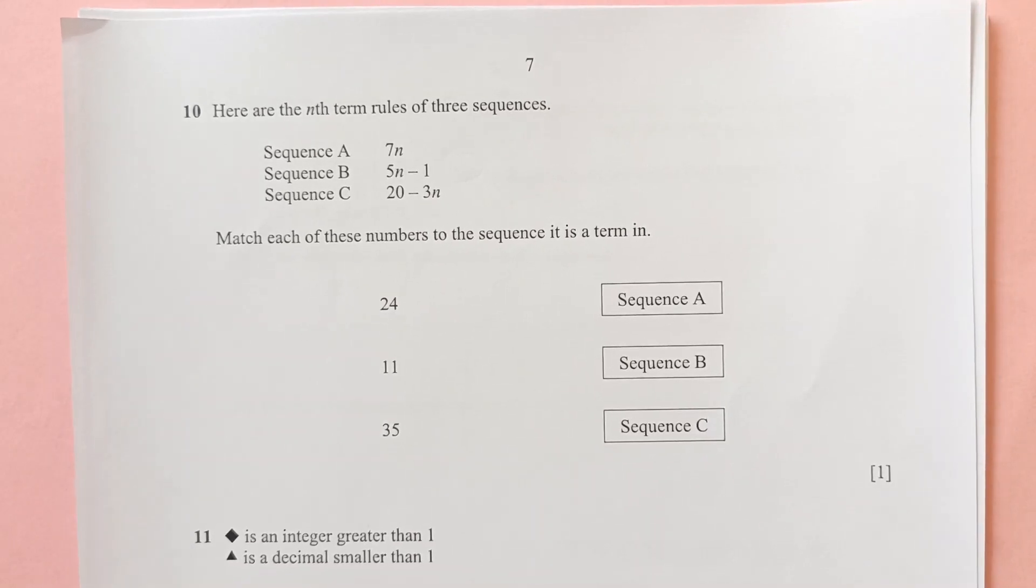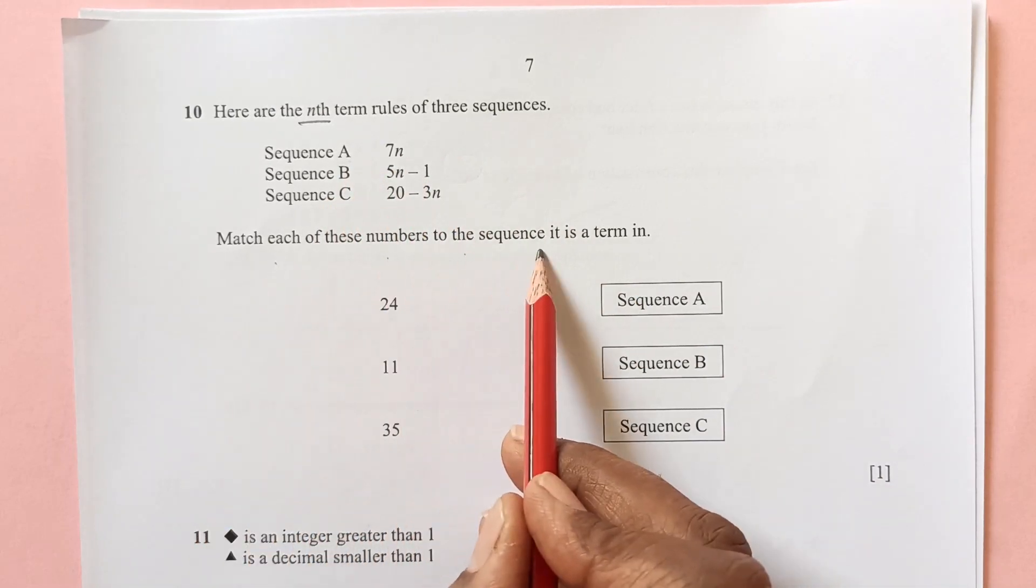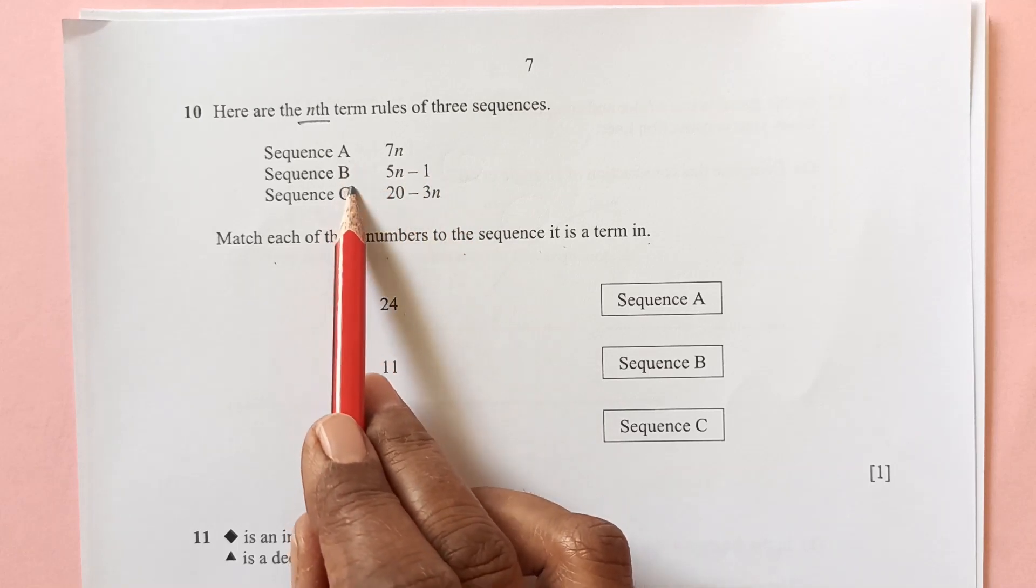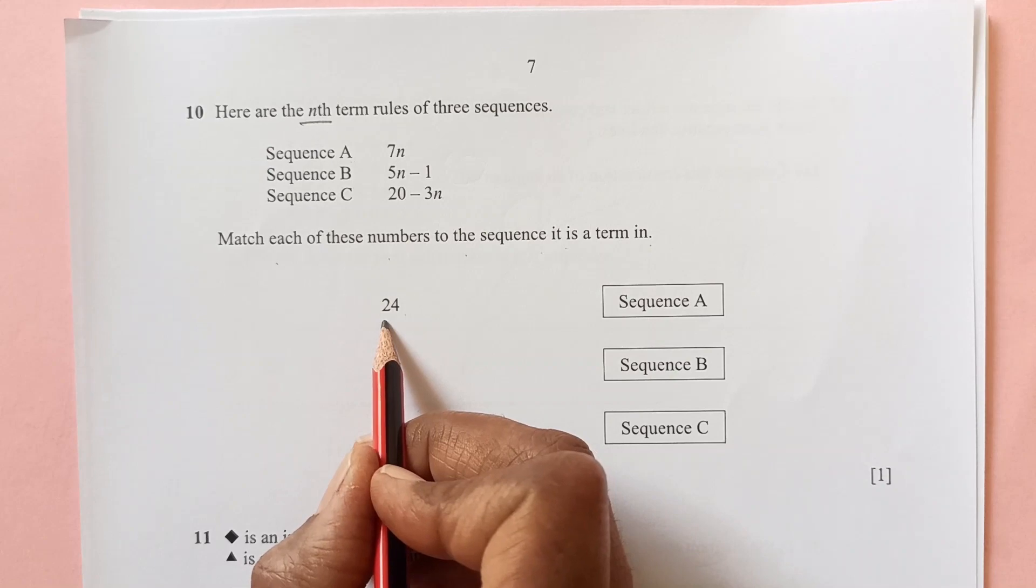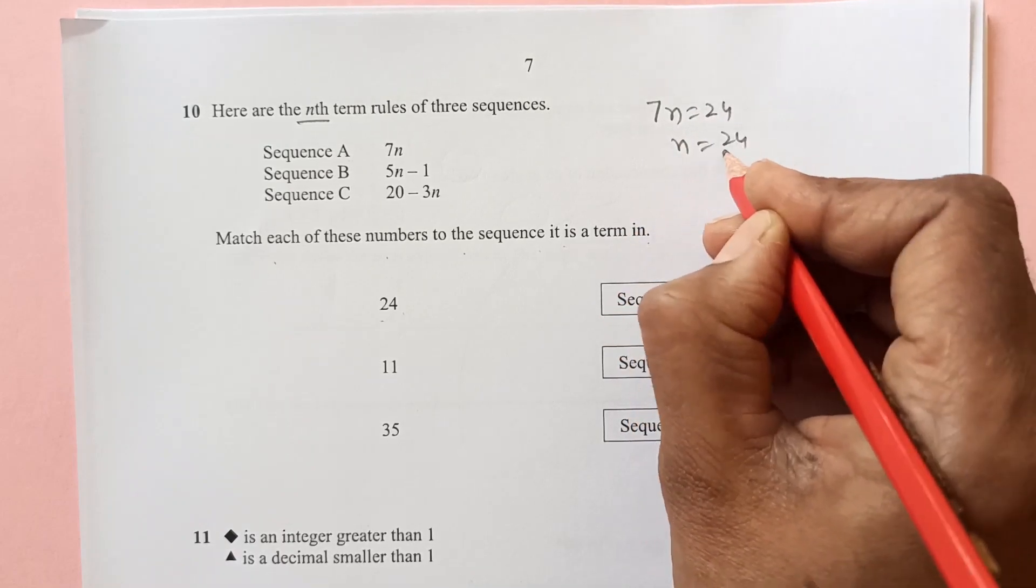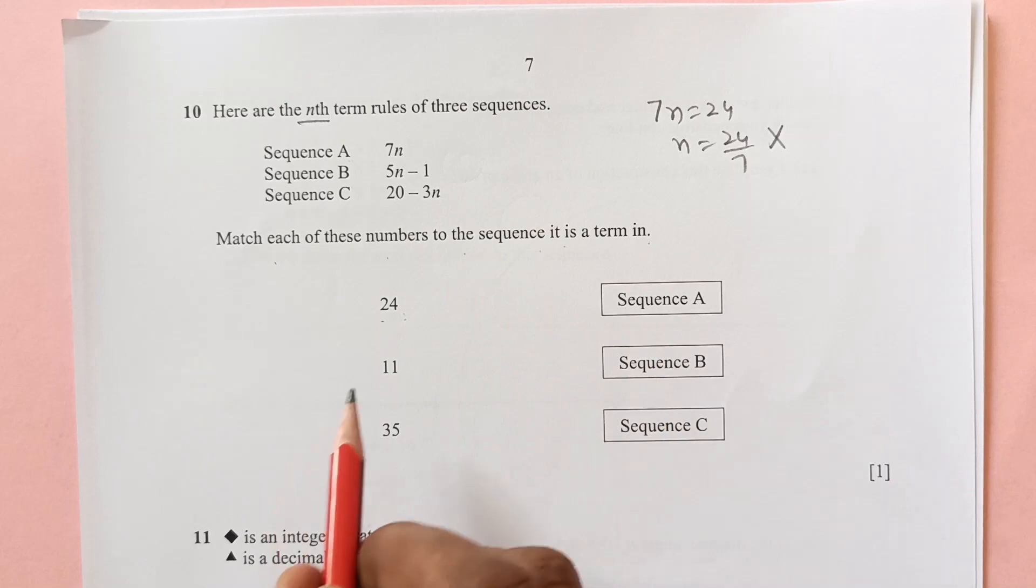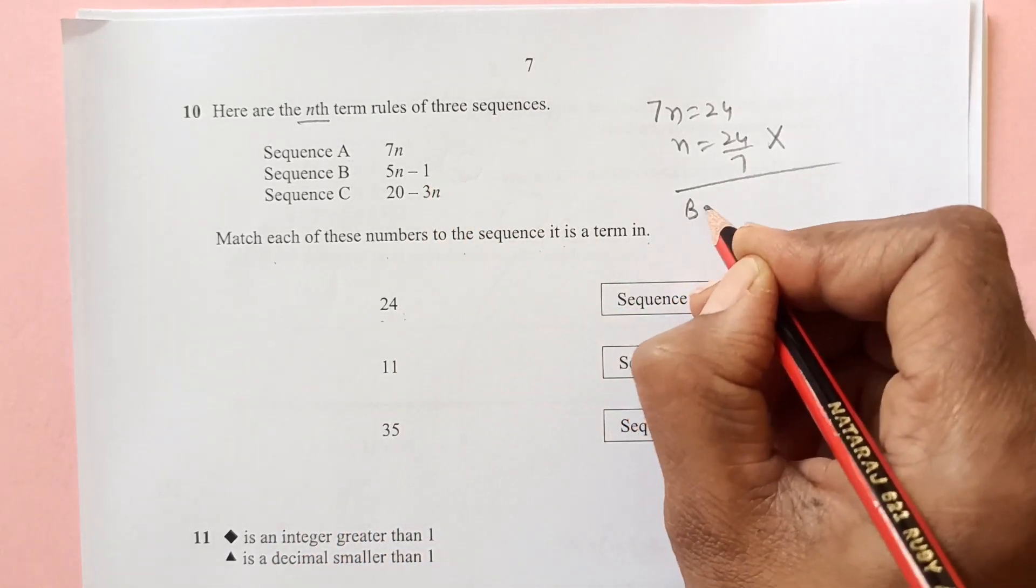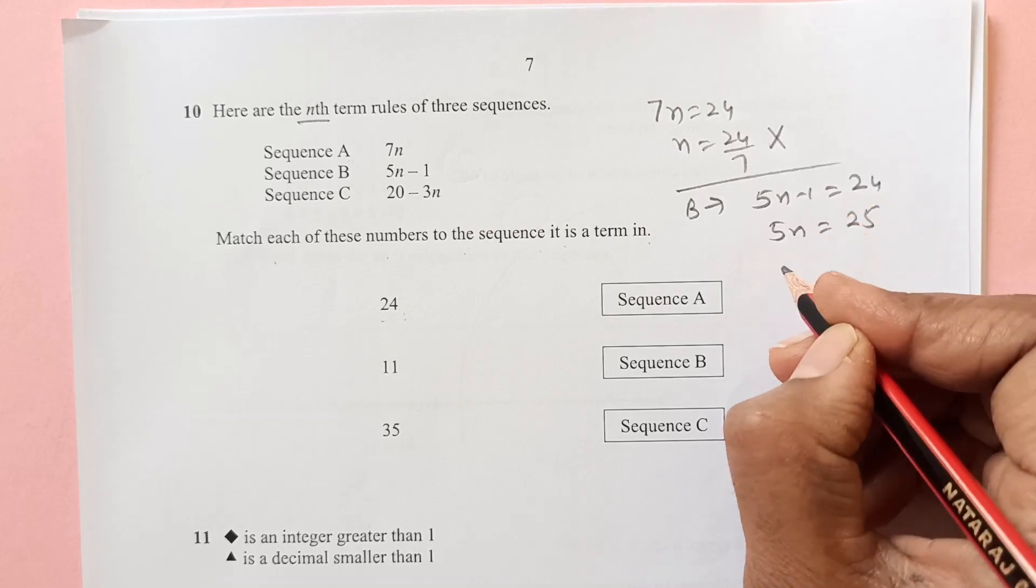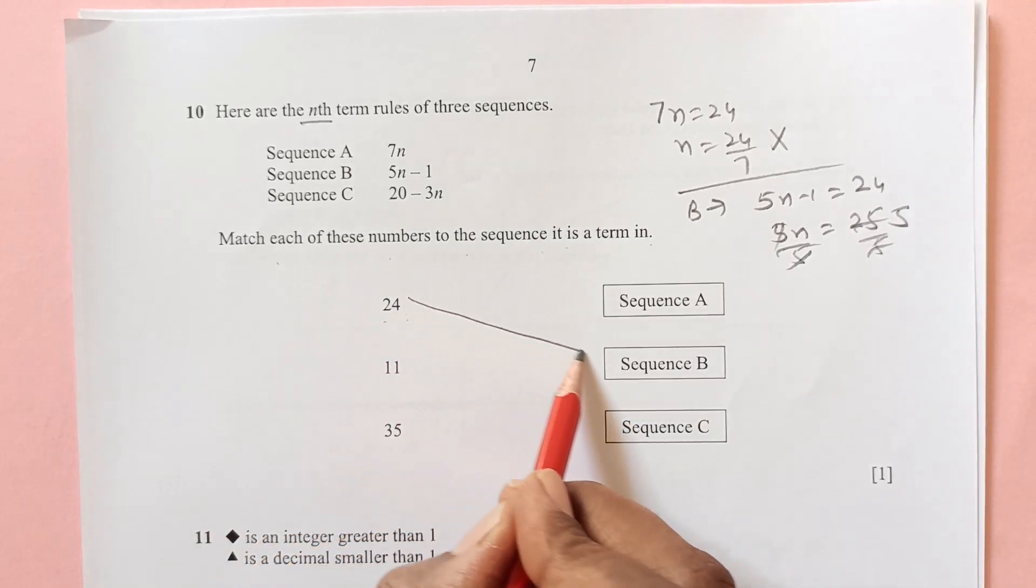Number 10, here are the nth term rules for 3 sequences. Sequence A, B and C. Match each of these numbers to the sequence in its term. Sequence A and we need to see like 24 is term of which sequence here, A, B or C. If I take here 7n for A, 7n equals to 24, so n is going to be 24 over 7 which is not a whole number, so that is not possible. So 24 is not term of A. Now let's for B, 5n minus 1 equals to 24. So 5n will be 25, 24 plus this one over 5. That is 5, so yes, this is the term of sequence B. 24 can go over here.